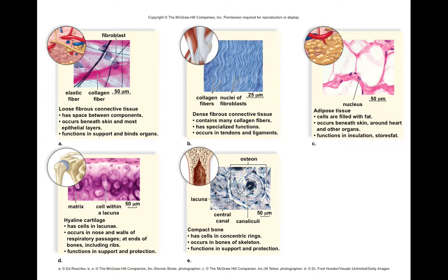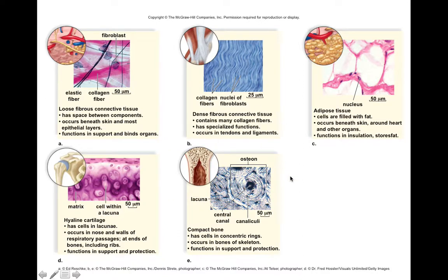Different kinds of bone and cartilage tissues fall in the connective tissue category. You have loose fibrous and dense fibrous connective tissues. Adipose will be your fat tissue mainly. Hyaline cartilage is very flexible cartilage found in your nose, for example. And then you have compact bone tissue. You'll want to understand how to differentiate these different types of connective tissues and their hallmark structures.